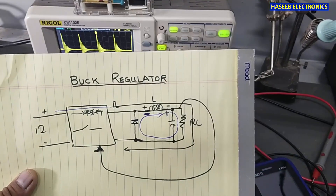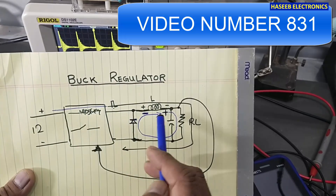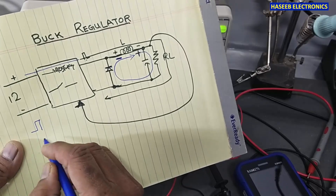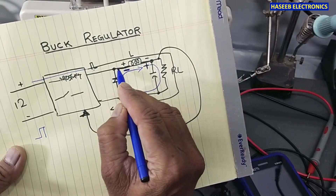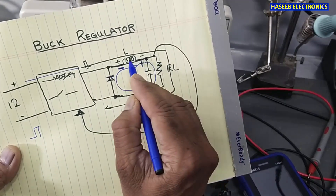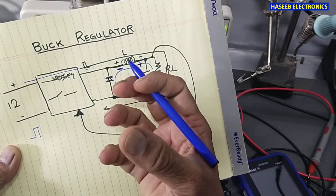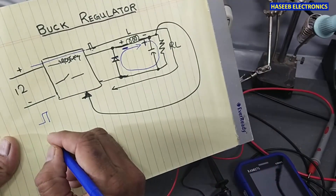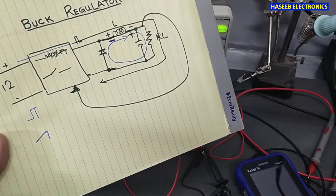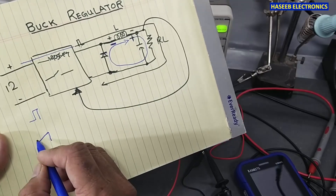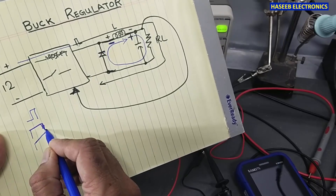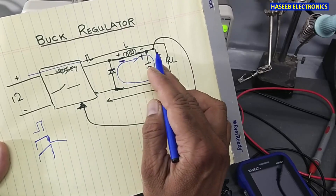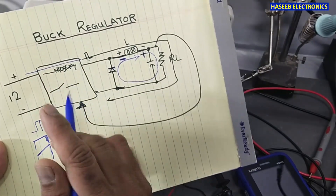Assalamu alaikum warahmatullahi wabarakatuh. Welcome back to my channel. While discussing the buck regulator, I explained that when the MOSFET turns on, we apply a pulse to the gate and positive voltage reaches the inductor. The current flows and the inductor creates a magnetic field, providing inductive reactance XL, allowing linear current flow. The current increases linearly to its maximum level during the on-time, and this current flows into the load.